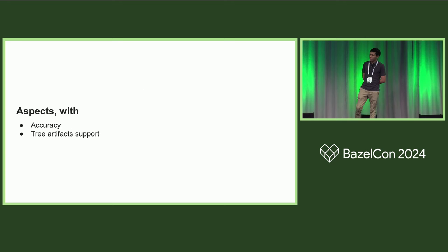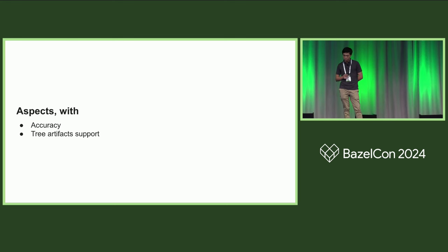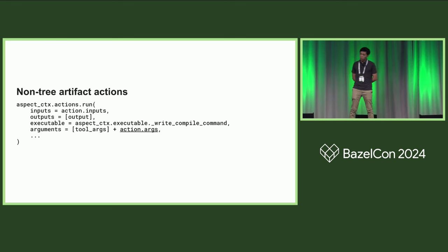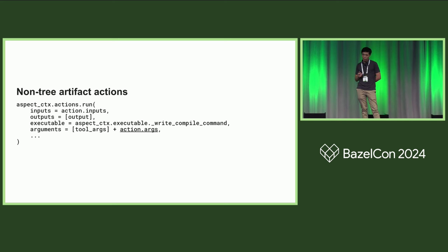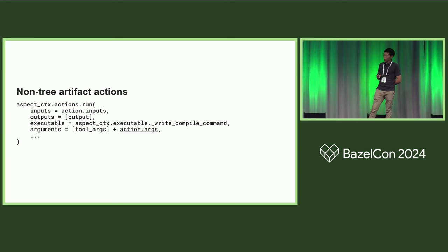Aspects were what we went with because we wanted the compilation database to be as accurate as possible and we needed to support tree artifacts. For non-tree artifact actions, instead of reconstructing compile commands from the compilation context, we reuse the Args object that you can get from the C++ compile action itself. This object will be expanded at the execution phase and contains accurate argument information that can help you get the exact compile commands from the action.